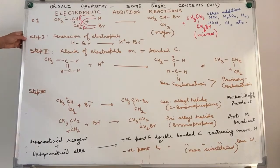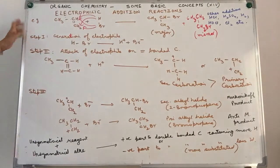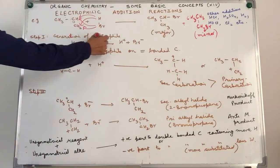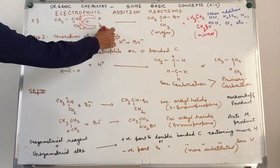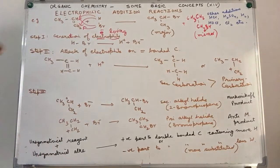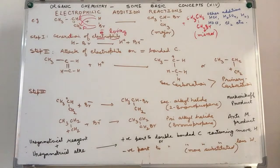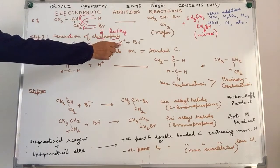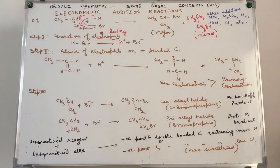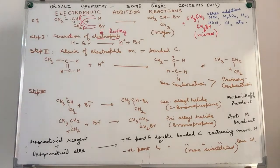The first step is the generation of the electrophile — electron loving. We need a species which is short of electrons. We get it from the reagent HBr via heterolytic fission: H positive and Br negative. The electrophile H positive goes and attacks the propene molecule.